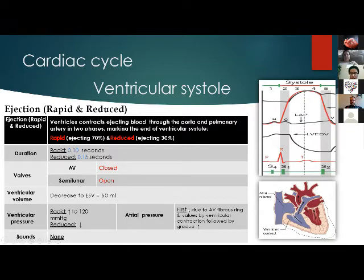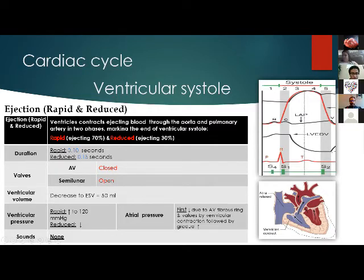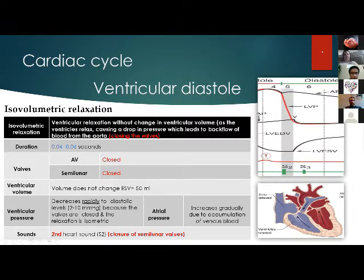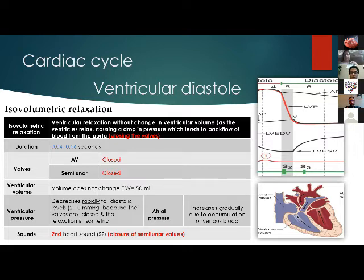Atrial pressure first decreases due to AV fiber closure and valve movement by the ventricle, followed by gradual increase due to venous return. As seen in the ventricular volume curve, left ventricular end-systolic pressure decreases due to the stroke volume. After the end of ventricular systole, the first part of ventricular diastole is the isovolumetric relaxation phase. The ventricles relax without any change in volume, leading to a drop in left ventricular pressure, ending with closure of the aortic and pulmonary valves.